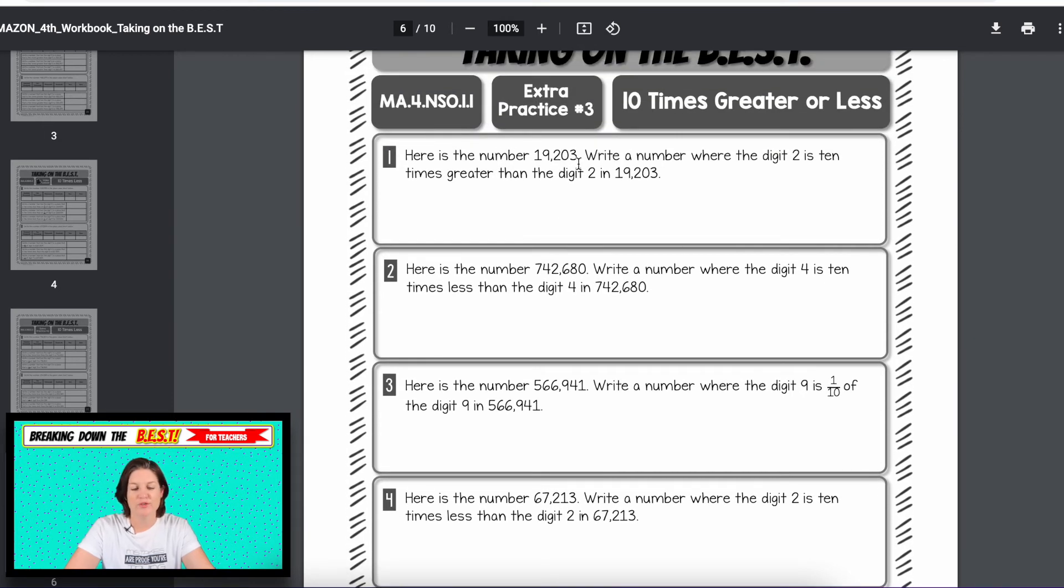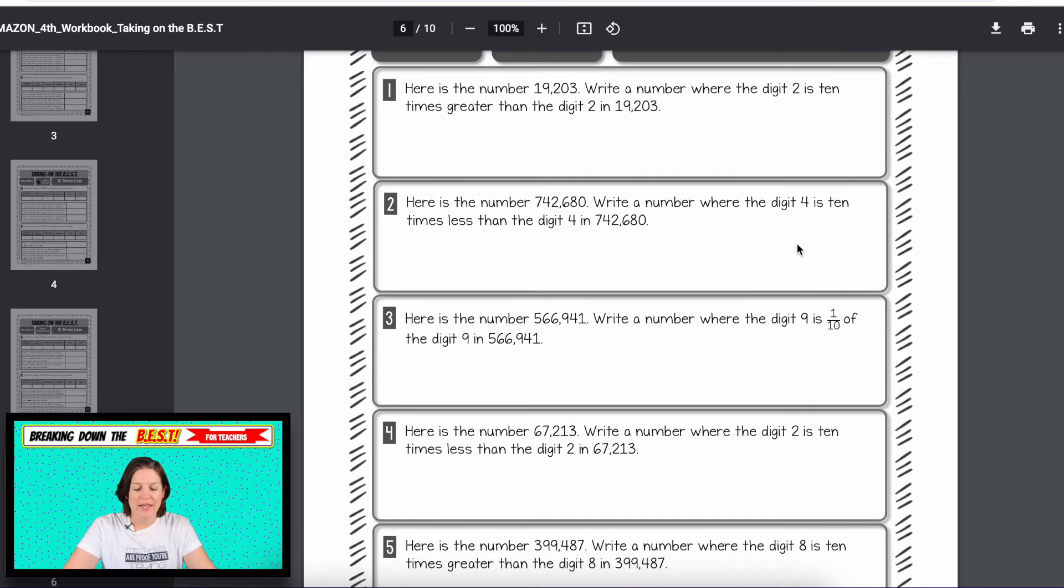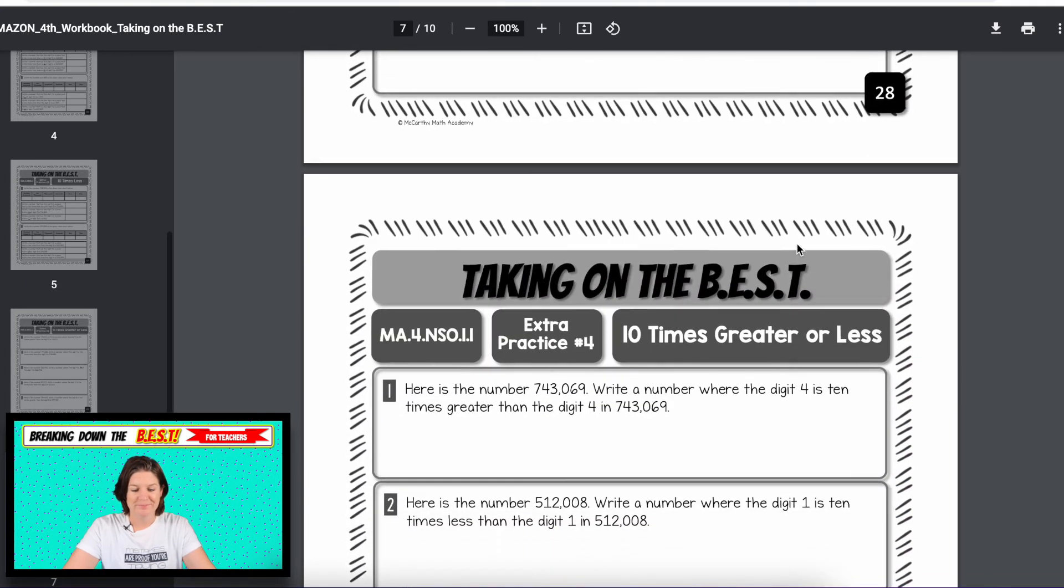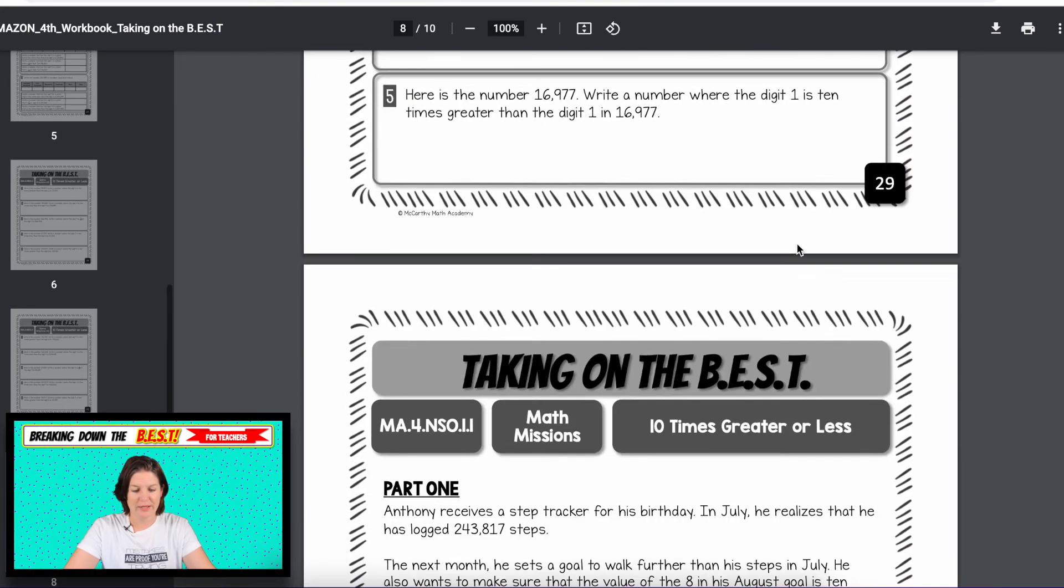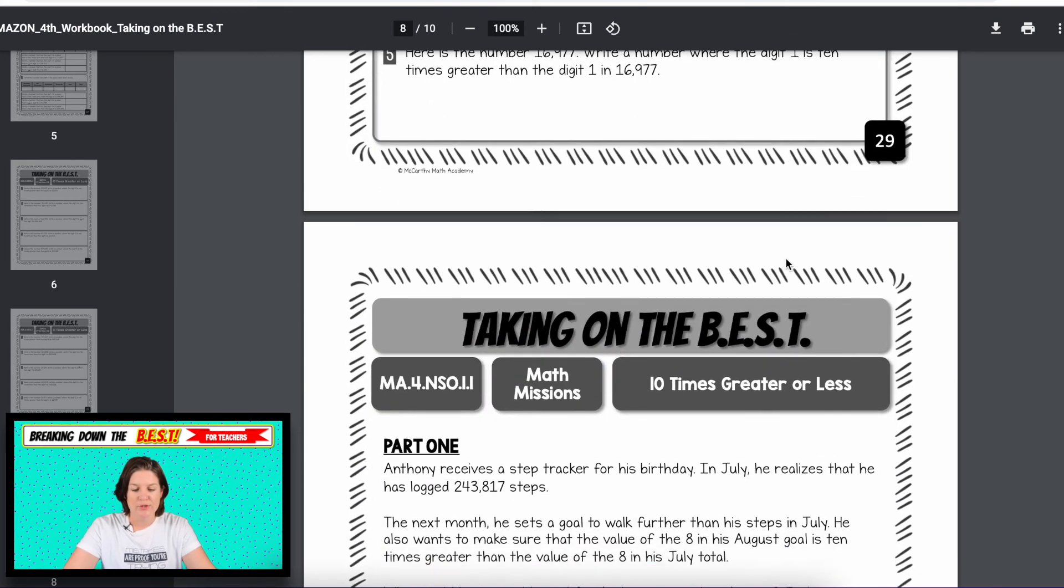If you have support staff at your school that they can work with students, you can have these ready for you to go. 10 times less, that's a video lesson. And then there's one extra practice page and two extra practice pages. And you can see here, it's a little bit different. Here's the number 19,203. Write a number where the digit two is 10 times greater than the digit two in 19,203. These types of problems are actually super wordy. But once students start to have practice with them, it clicks, they start to see the patterns of what's happening. And it makes sense. And that's what this is all about is that practice, it builds that confidence muscle. And that's what we're trying to do, right? These were 10 times greater or less. So having to switch back and forth between the two.